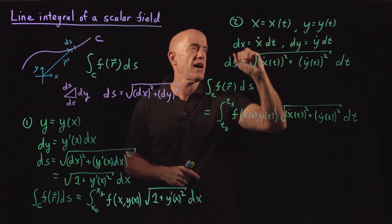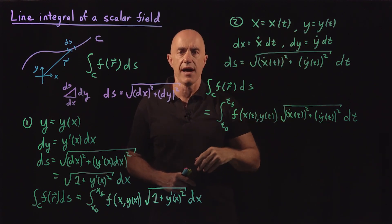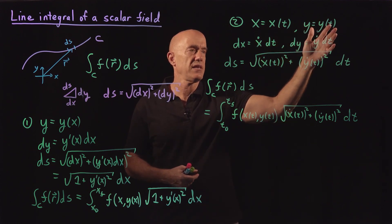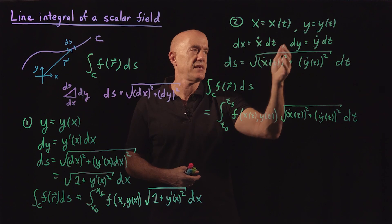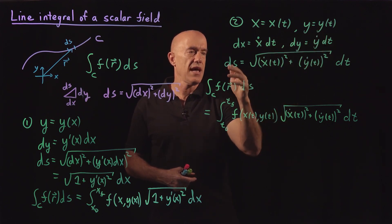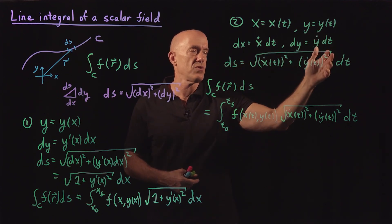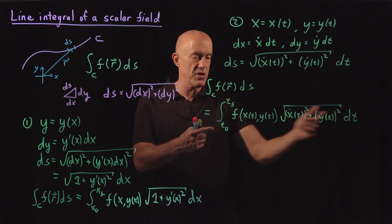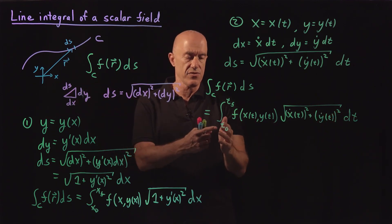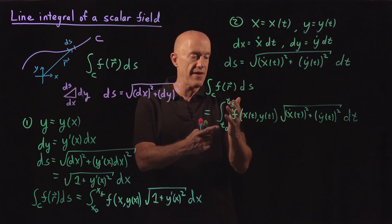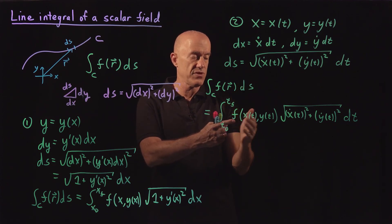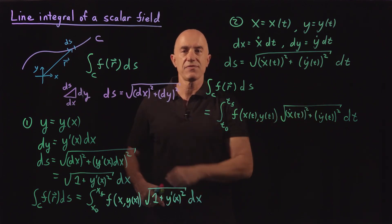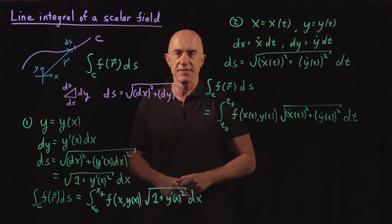The other method is if the curve is parameterized: x is a function of t, y is a function of t — t doesn't have to be time, just any parameter. Then dx equals x-dot dt, dy equals y-dot dt, and ds becomes the square root of x-dot squared plus y-dot squared, times dt. Using parameter t, we integrate from t-naught to t-final, with f as a function of t times this factor dt. I'm Jeff Chasnoff — thanks for watching, and I'll see you in the next video.